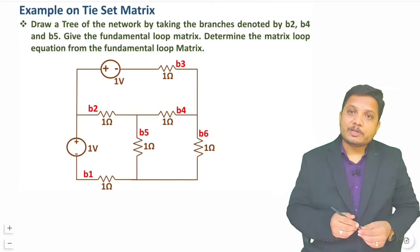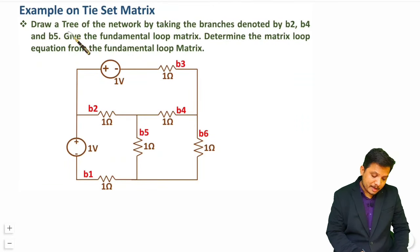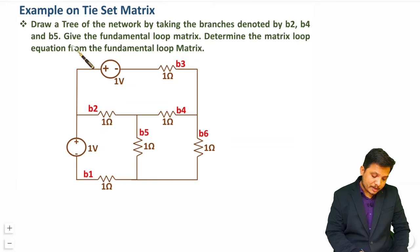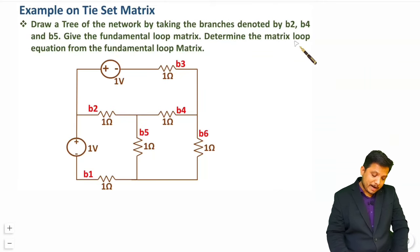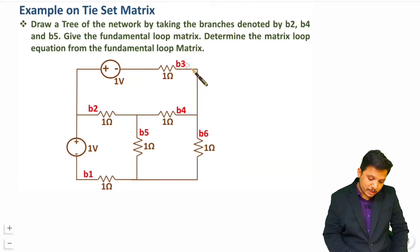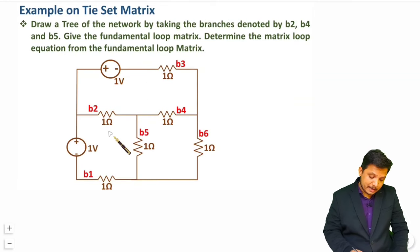So let us see the question. We are required to draw a tree of the network by considering branches B2, B4, and B5. After that I need to form the fundamental loop matrix — that is the tie set matrix — and also determine the matrix loop equation from the fundamental loop matrix. The branches are denoted by name, and we need to form the tree from the network.